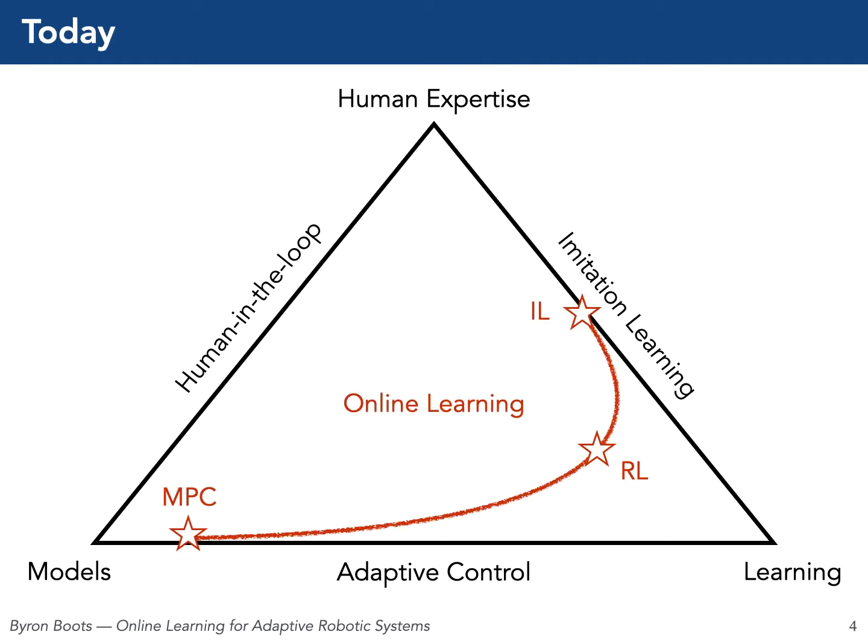Today I really want to focus on three different approaches to designing robot behavior and how they can be related through online learning. We'll talk about model predictive control, reinforcement learning, and imitation learning, and along the way we'll discuss how reasoning and prior knowledge can be combined with data for designing more effective robotic systems. But first I want to talk about online learning, which is a sub-area of machine learning, and why it may make sense to think about robotics problems as online learning problems.